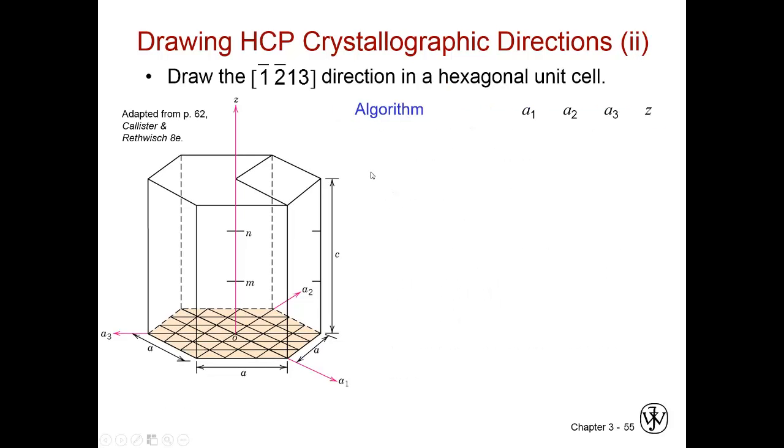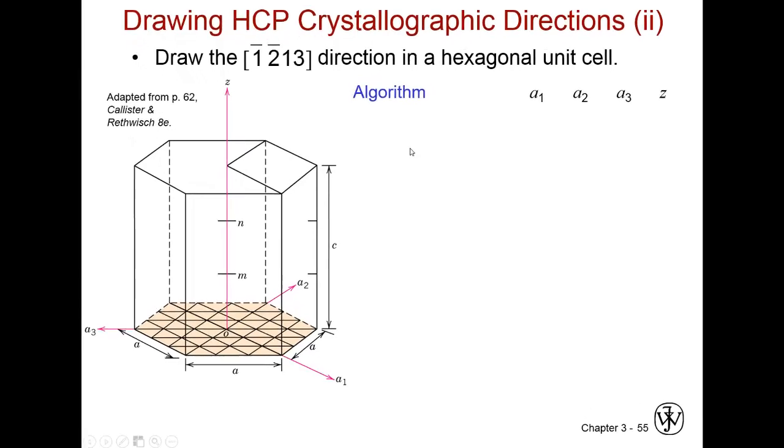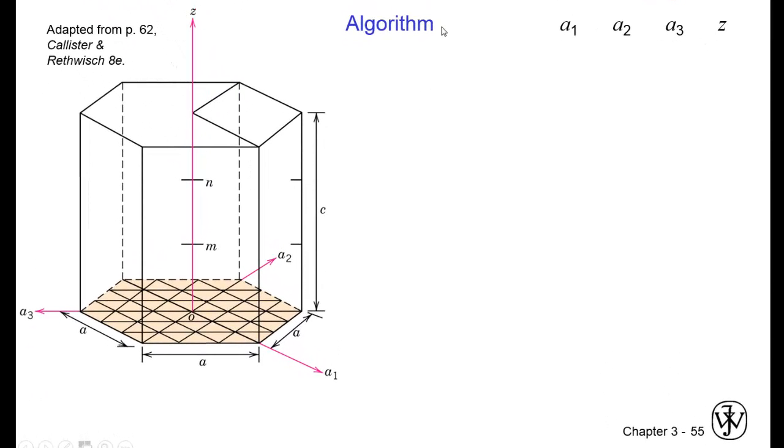So here's an example. Draw the one-bar, two-bar, one-three direction in a hexagonal unit cell. So we're going to go through those steps that I just went through on the previous slide. And we're going to remove the brackets.